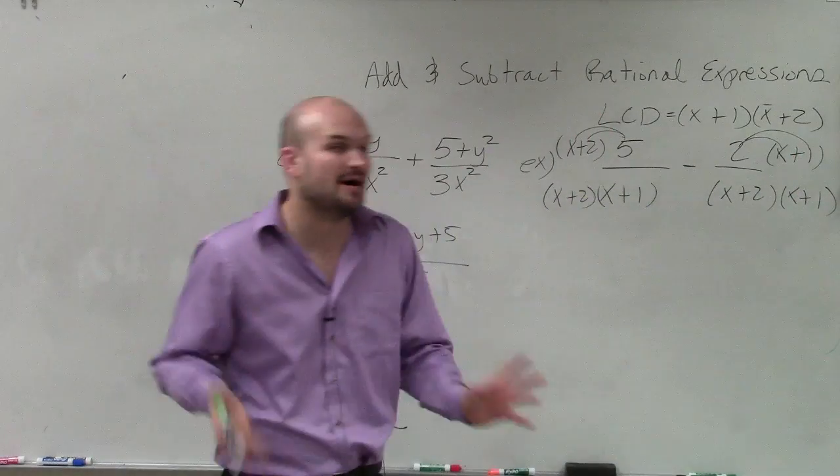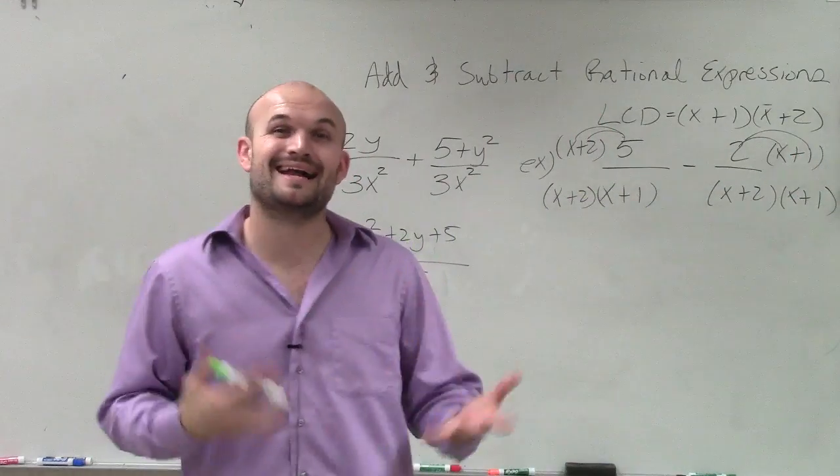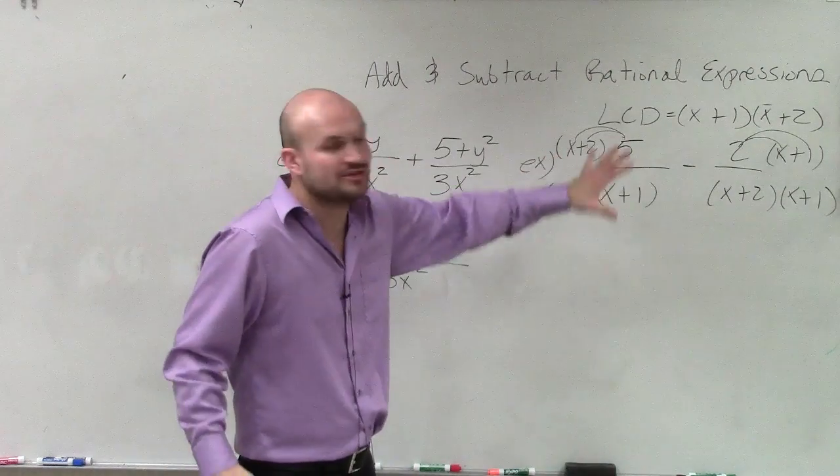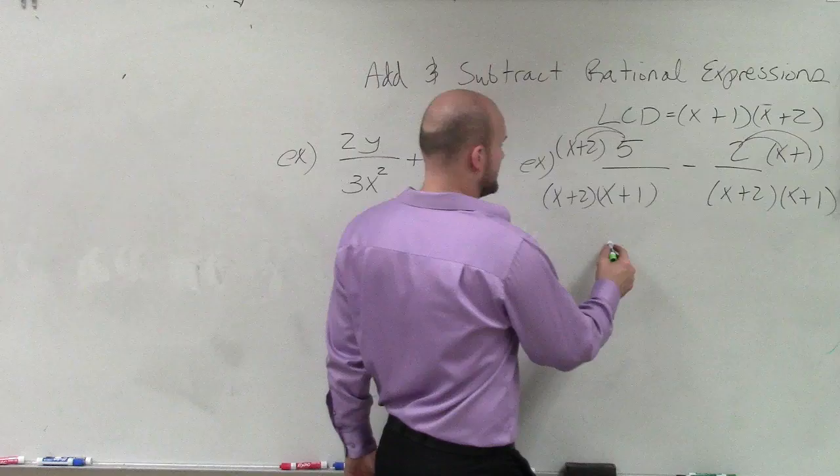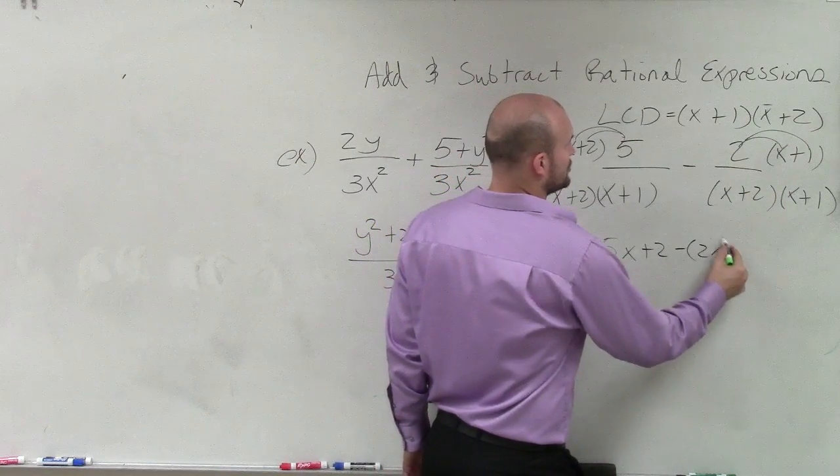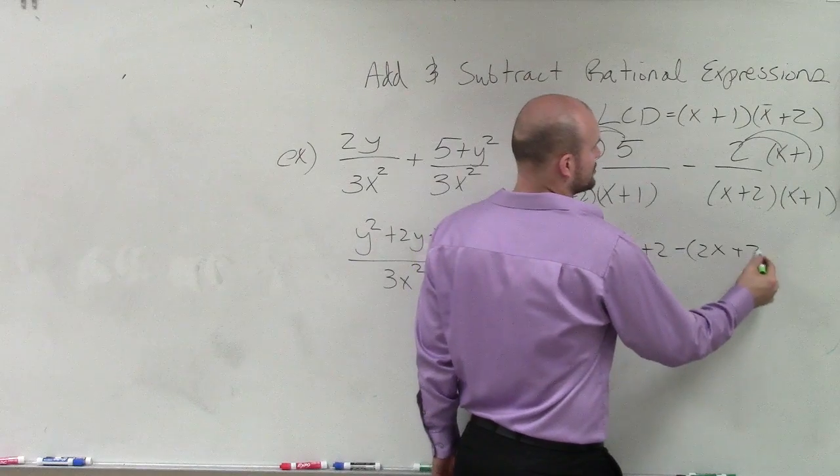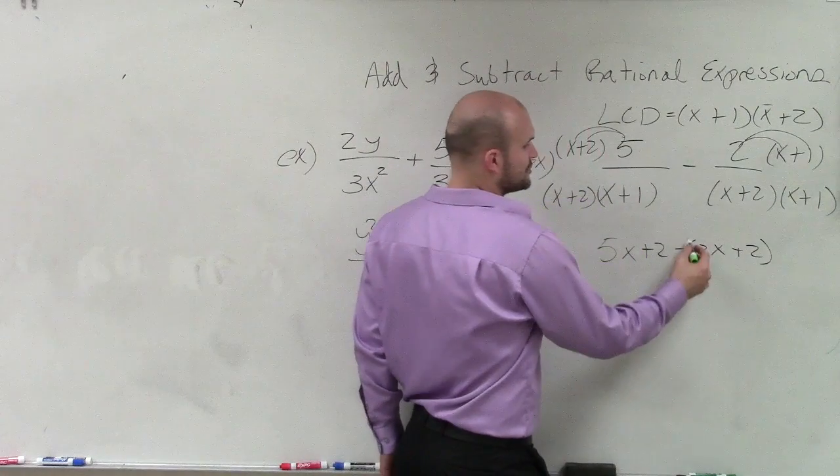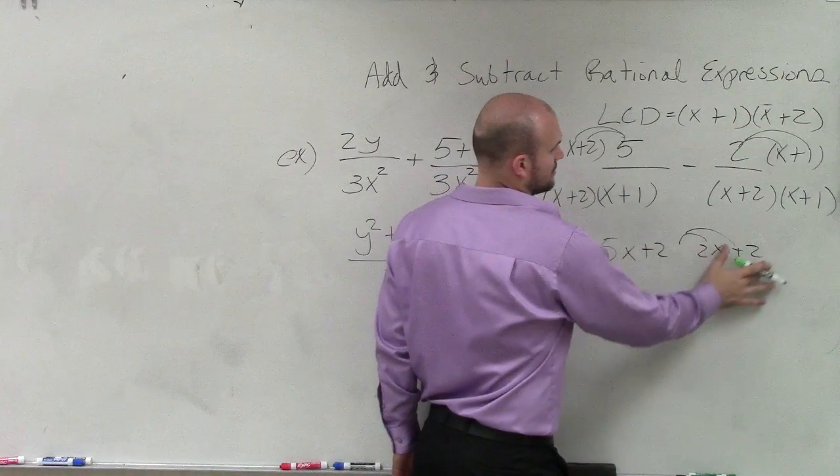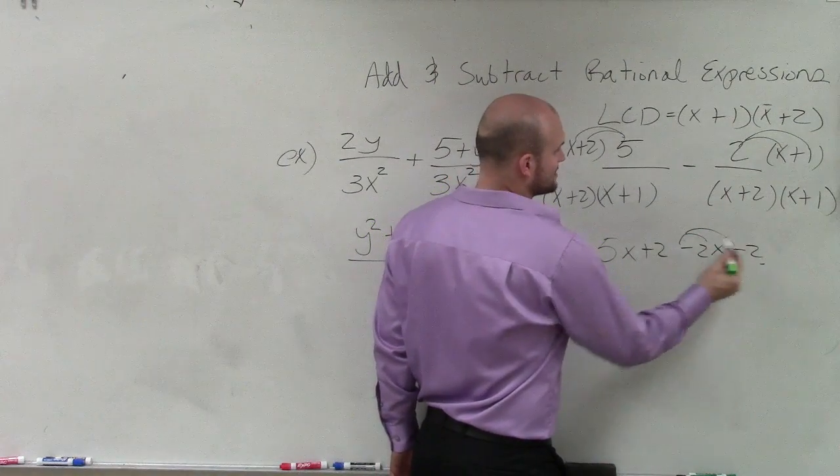So applying distributive property, applying FOIL, those are a lot of things that you're going to be applying, and especially factoring when doing these rational expressions. So therefore, I'll have 5x + 2 minus 2x + 2. Now, I can apply the distributive property here and rewrite this as negative 2x and minus 2.